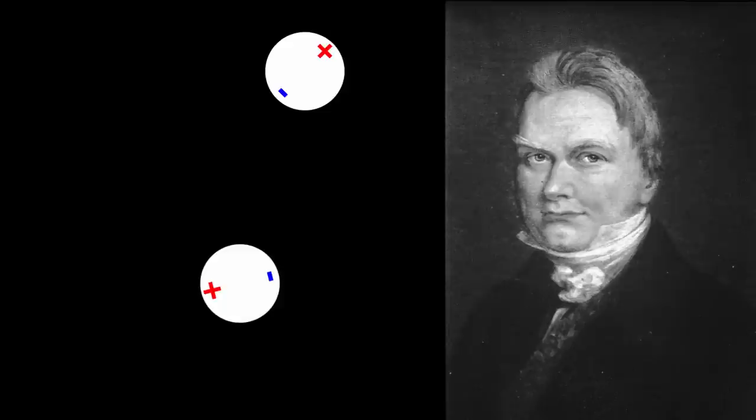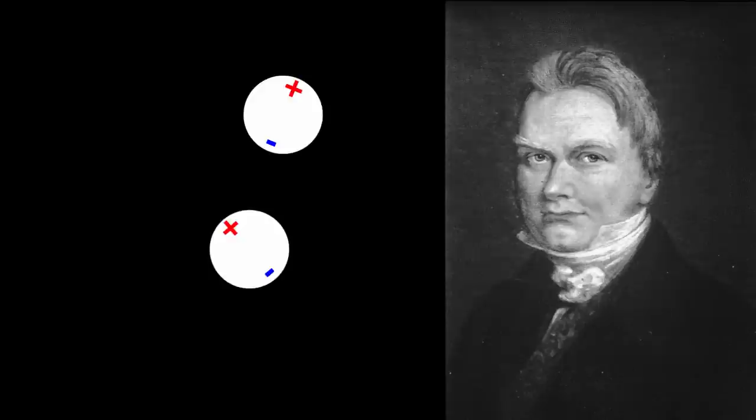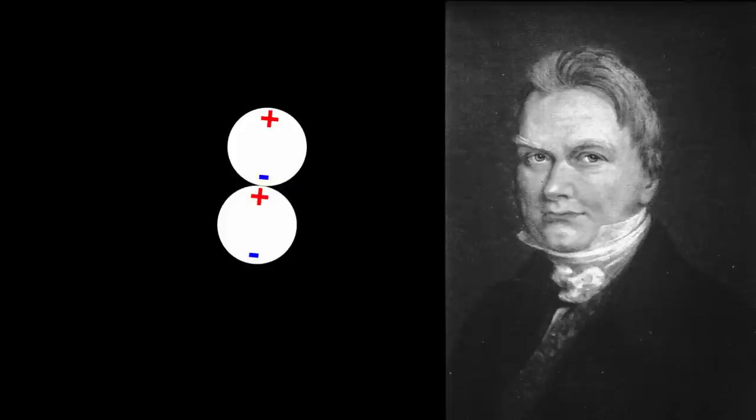Two atoms which are about to unite dispose themselves so that the positive pole of one touches the negative pole of the other. Electricities of those two poles then discharge each other giving rise to heat and light which are observed to accompany the act of combination.